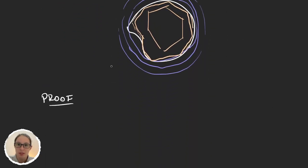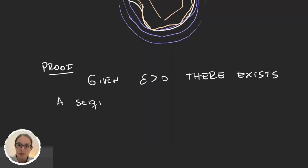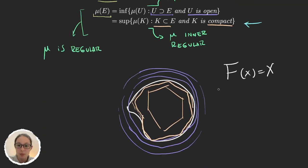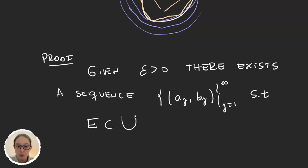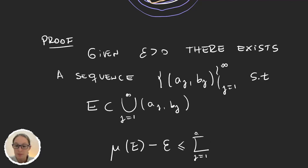Since it is an infimum, given epsilon greater than zero, there exists a sequence of open intervals (a_j, b_j) such that two things happen. First, E is a subset of the union from j equals 1 to infinity of these intervals. And second, because it is the infimum, the measure of E minus epsilon is less than or equal to the sum of the measures of these intervals.